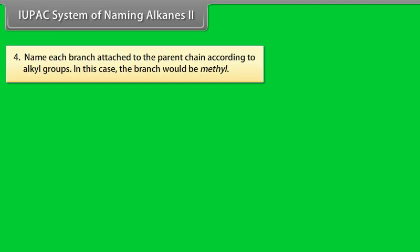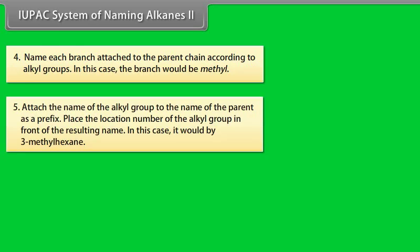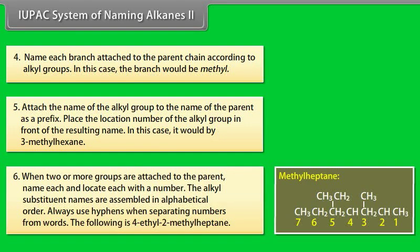Number 4, name each branch attached to the parent chain according to alkyl groups. In this case, the branch would be methyl. Number 5, attach the name of the alkyl group to the name of the parent as a prefix. Place the location number of the alkyl group in front of the resulting name. In this case, it would be 3-methylhexane. Number 6, when two or more groups are attached to the parent, name each and locate each with a number. The alkyl substituent names are assembled in alphabetical order. Always use hyphens when separating numbers from words. The following is 4-ethyl-2-methylheptane.